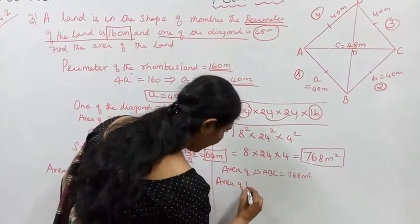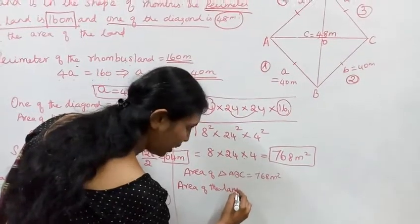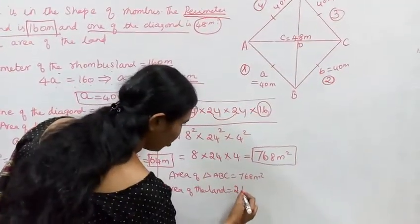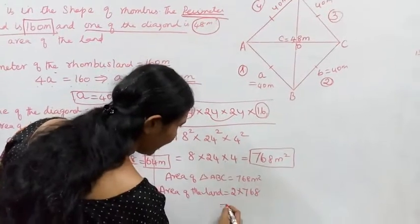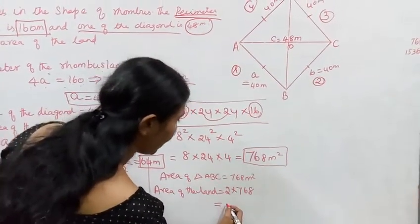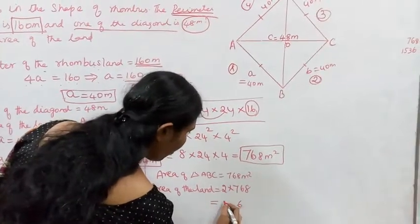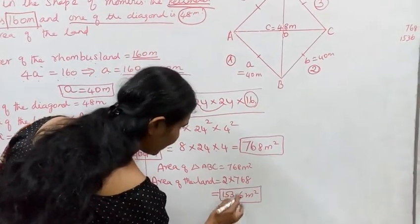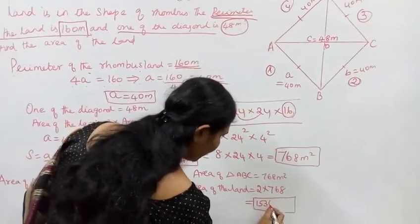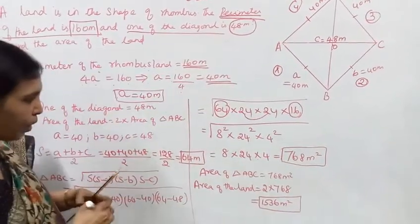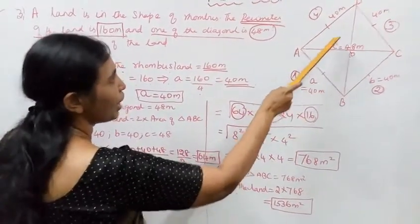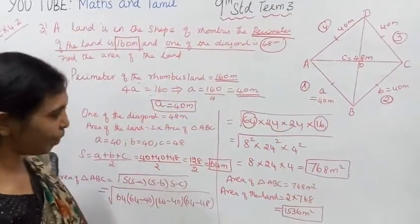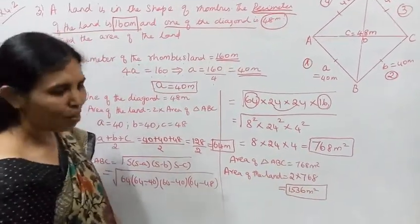Area of the land, the rhombus ABCD, equals 2 into 768. 2 into 768 equals 1536 meters squared. The area of the rhombus is 1536 meters squared.